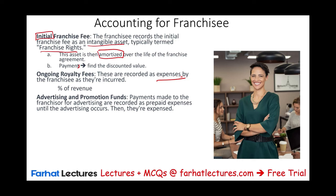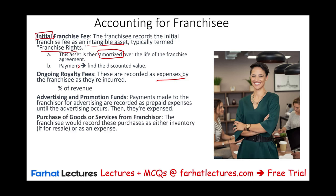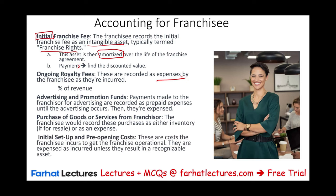Every year you contribute to the advertising campaign of Dunkin' Donuts — national or global — and as Dunkin' Donuts advertises, you benefit from those advertisements. You will also have to purchase goods and services from the franchisor; the cost of those services are operational costs and are expensed as incurred. However, if you purchase inventory, remember inventory is an asset until it is expensed. You might also have initial setup costs and pre-opening costs — costs to train you, set up the store, and get you ready. These costs incurred to get the franchise operational are expensed as incurred unless they result in a recognizable asset.